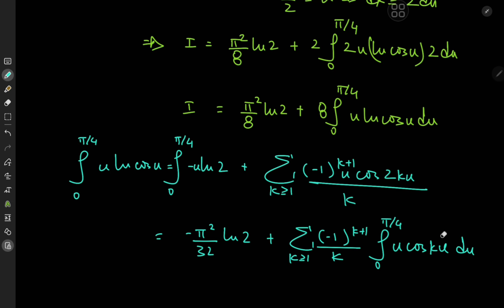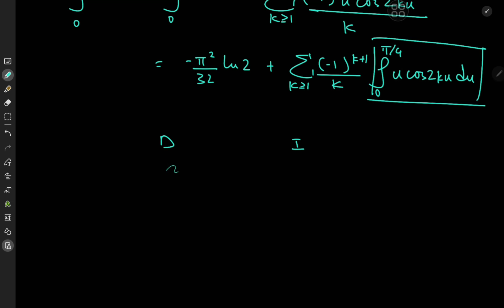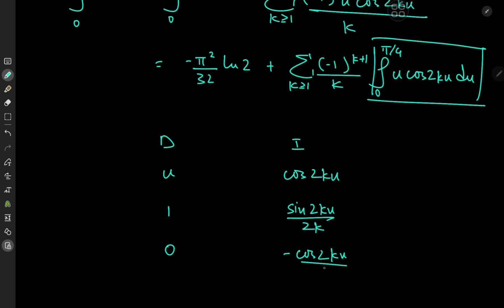For the remaining integral of u·cos(2ku), we use integration by parts: differentiate the u function and integrate cos(2ku). On differentiation we get 1 and then 0. On integration we get sin(2ku)/(2k), and then −cos(2ku)/(4k²).